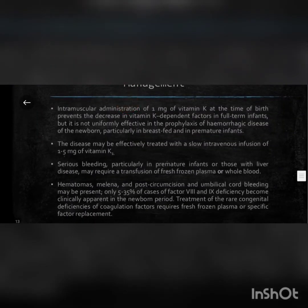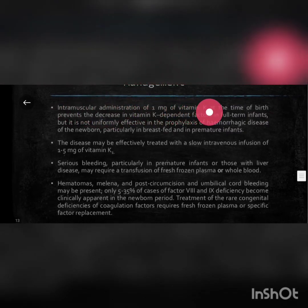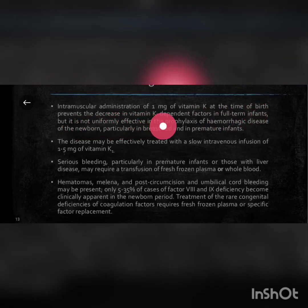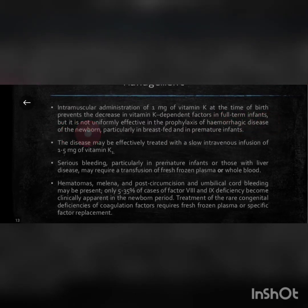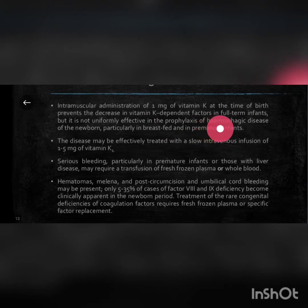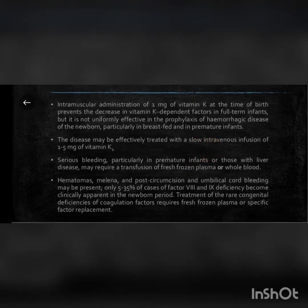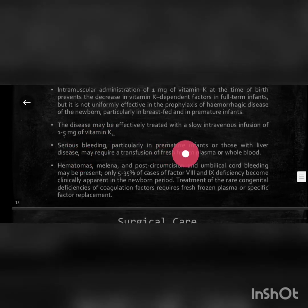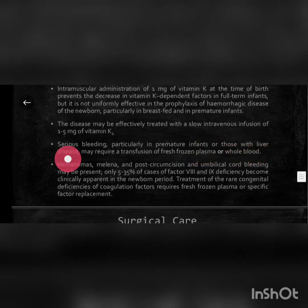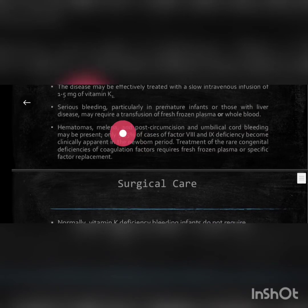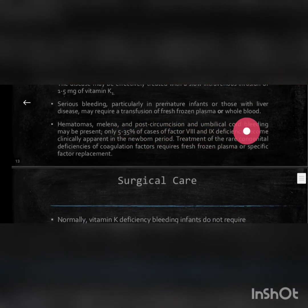Management: intramuscular administration of 1 mg of vitamin K at the time of birth prevents the decrease in vitamin K-dependent factors in full-term infants, but it is not uniformly effective in prophylaxis of hemorrhagic disease of the newborn, particularly in breastfed and premature infants. The disease may be effectively treated with a low intravenous infusion of 1 to 5 mg of vitamin K1. Serious bleeding, particularly in premature infants or those with liver disease, may require transfusion of fresh frozen plasma or whole blood.